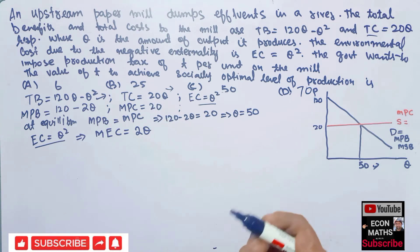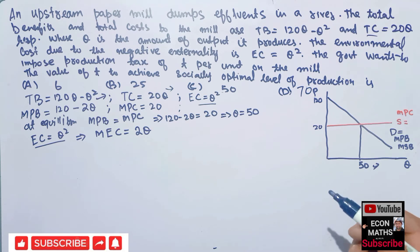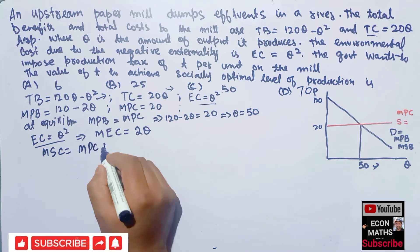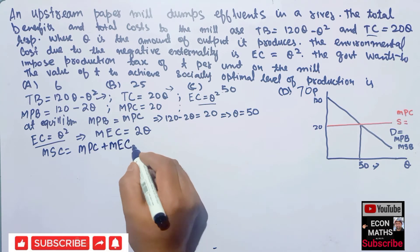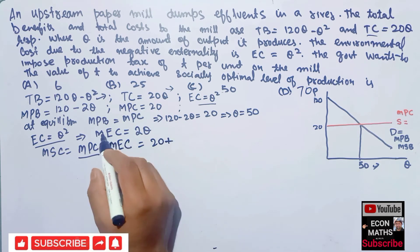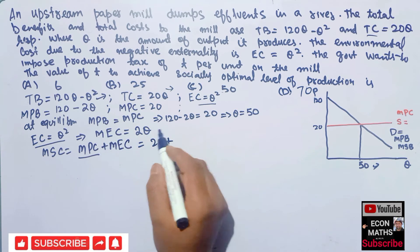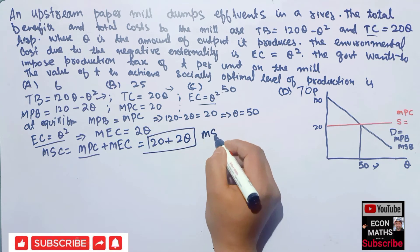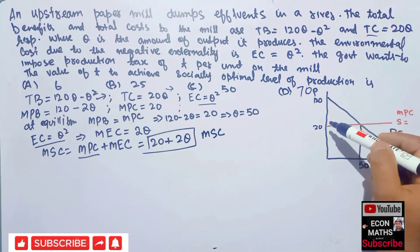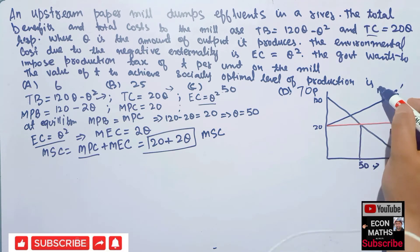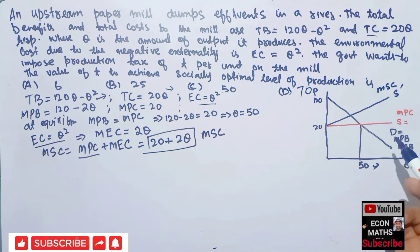To address this, we need to derive the marginal social cost. Marginal social cost equals marginal private cost plus marginal environmental cost. Marginal private cost is 20 and marginal environmental cost is 2q, so marginal social cost equals 20 plus 2q. This gives us a new upward-sloping supply curve, which is the marginal social cost curve — the combination of marginal private cost and marginal external cost.